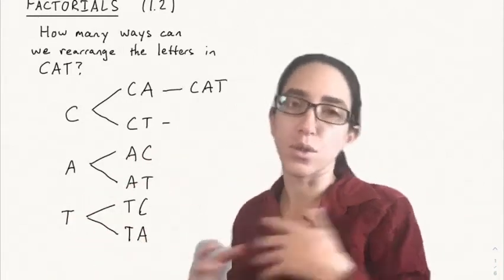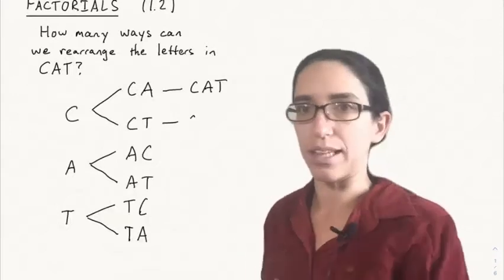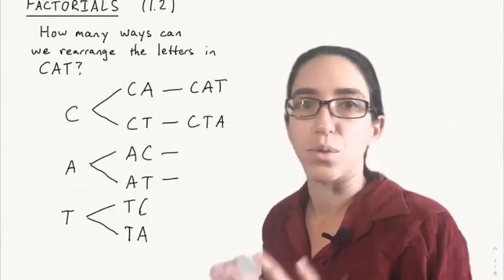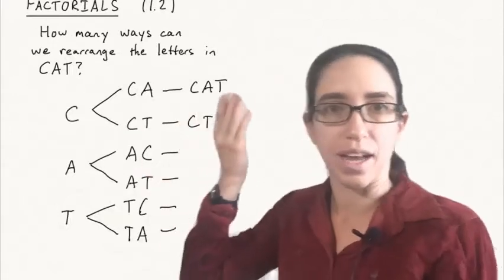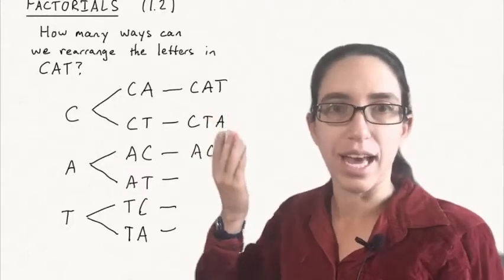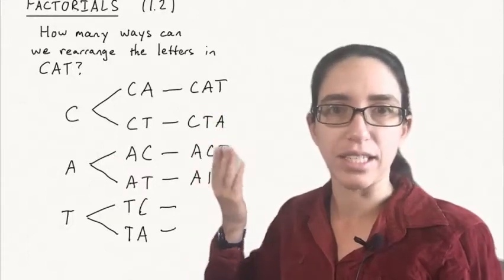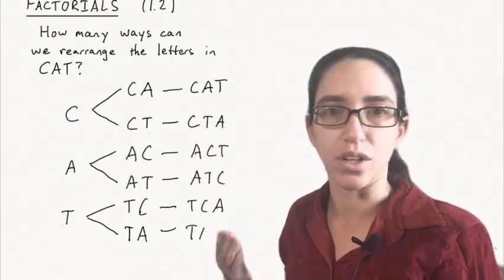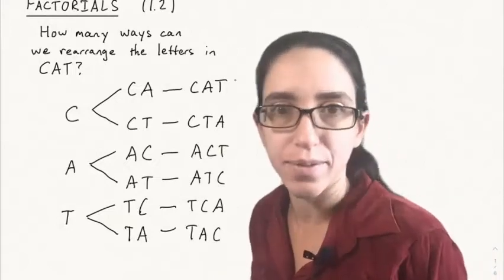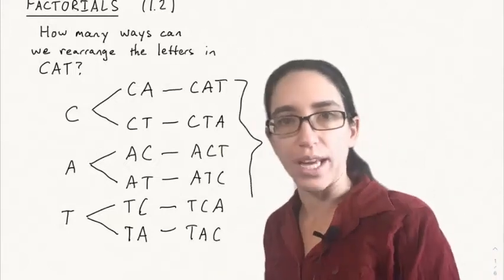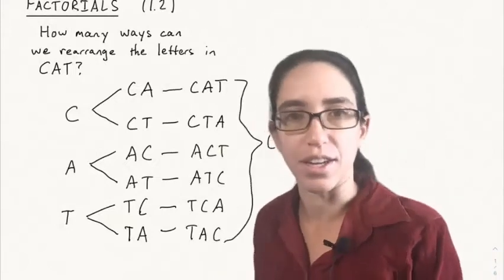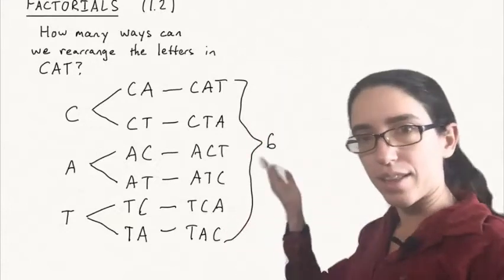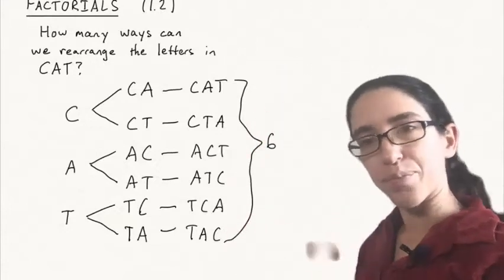And then from there, there's only one possibility left for the last letter because there's only one letter remaining. So we just fill in. After C-A you have to put T — that's CAT. But then you can get C-T-A, or A-C-T, or A-T-C, or T-C-A, or T-A-C. And those are all the ways of rearranging the letters C, A, and T in order. We see that there are six of them if you just count them.